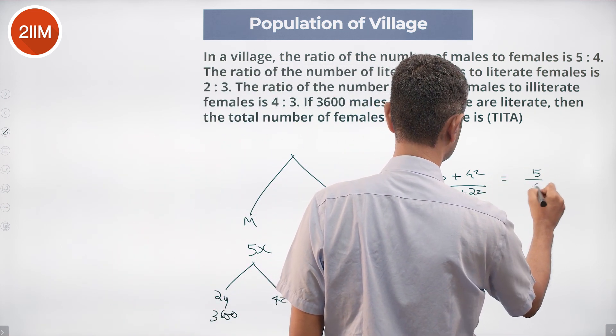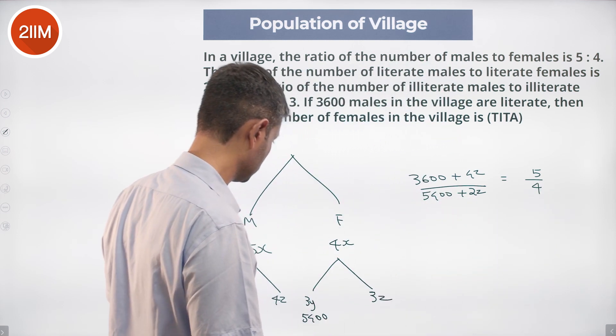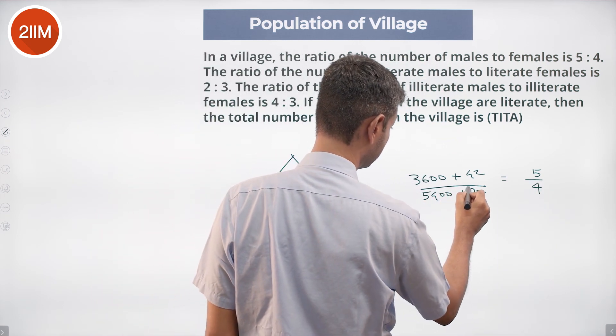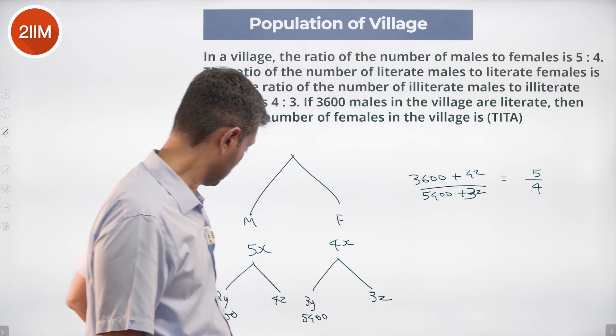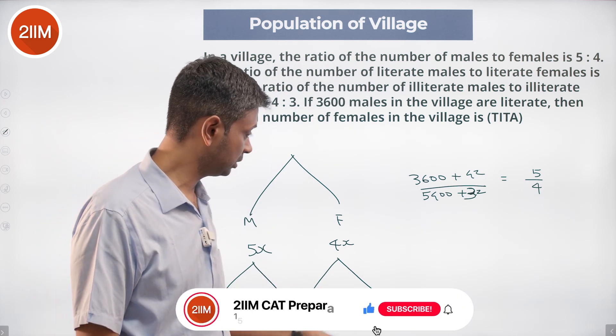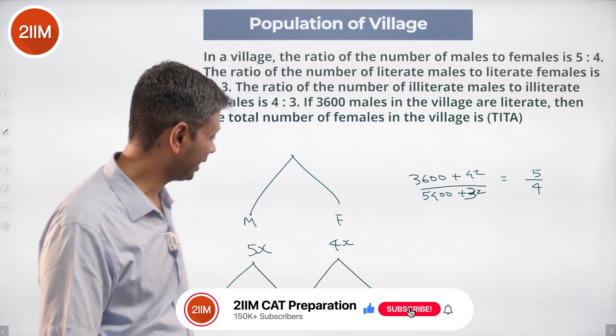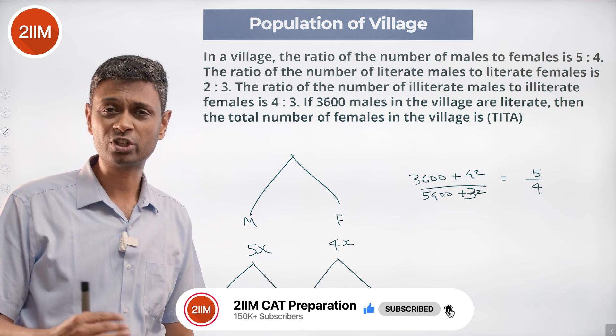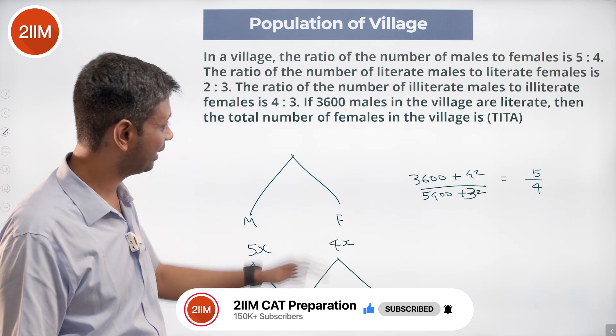5 over 4. This plus this is to this plus this, 5 is to 4. Solve for Z, then we'll go step by step and find Y, find X, all of it.